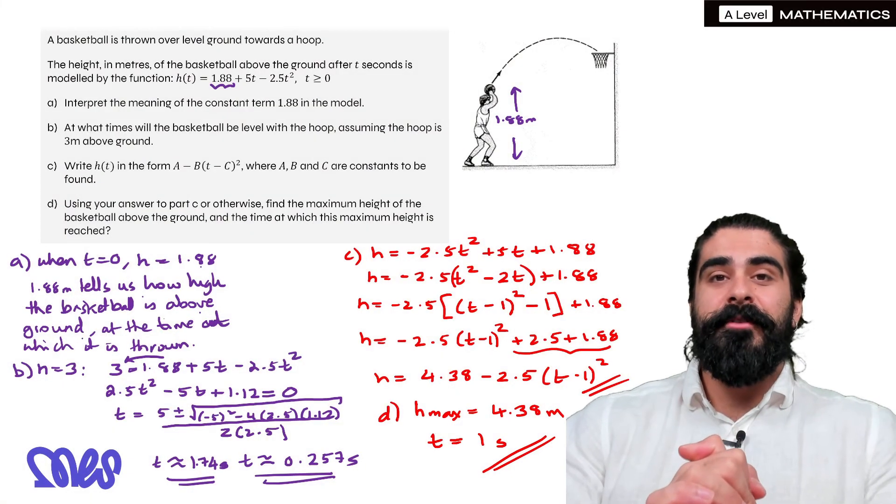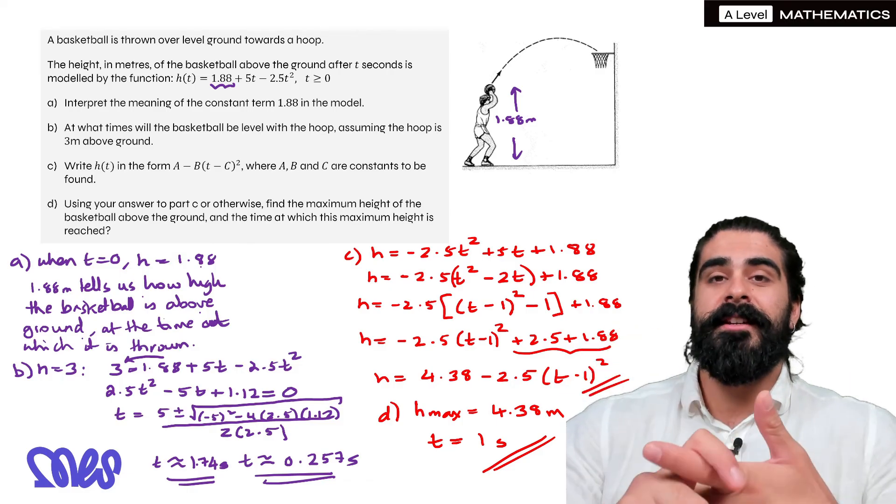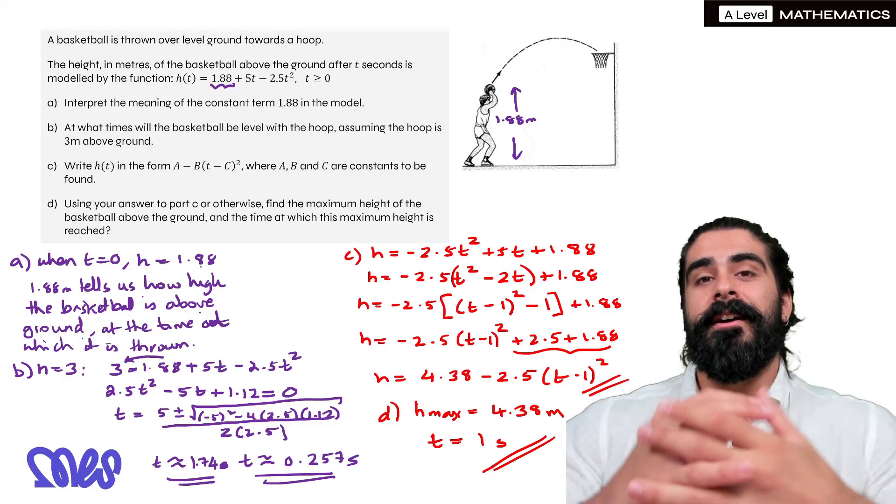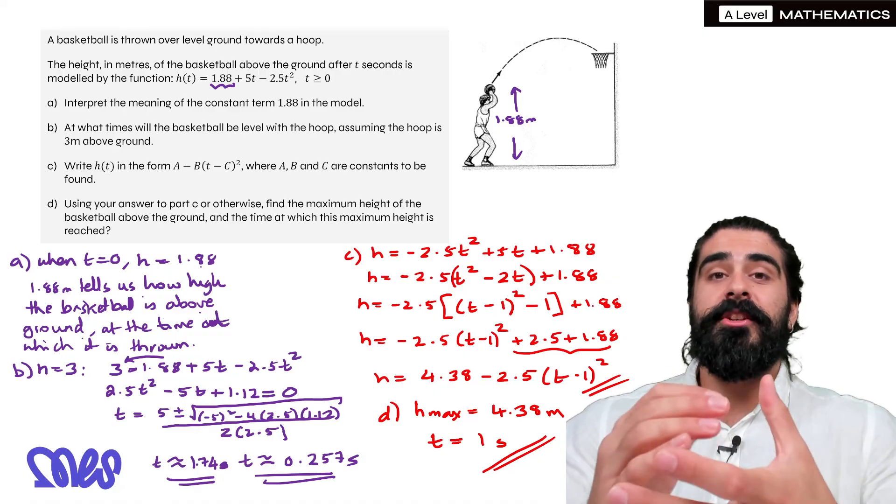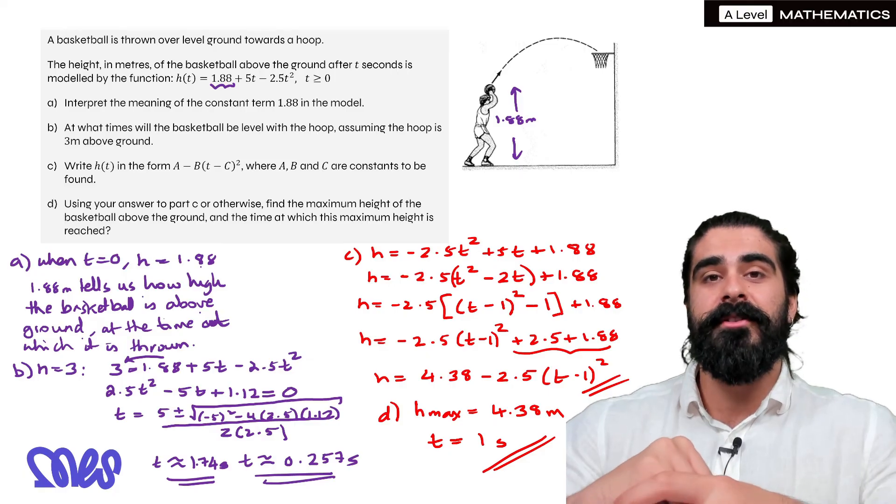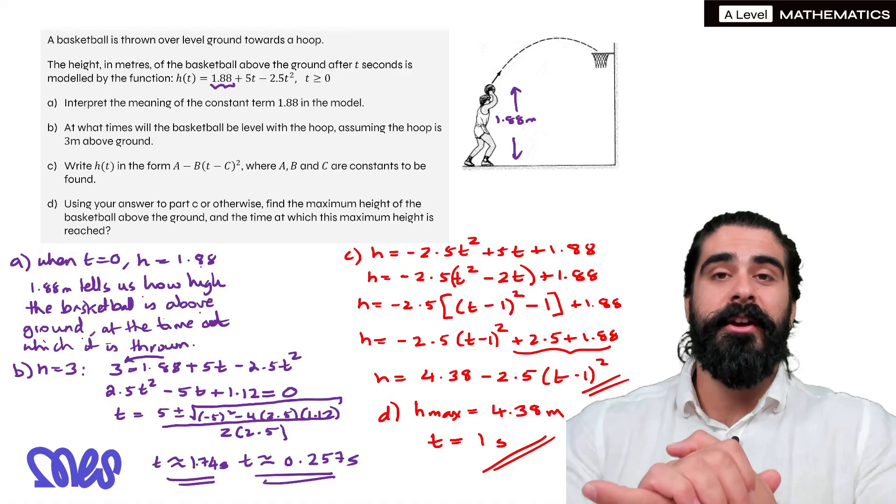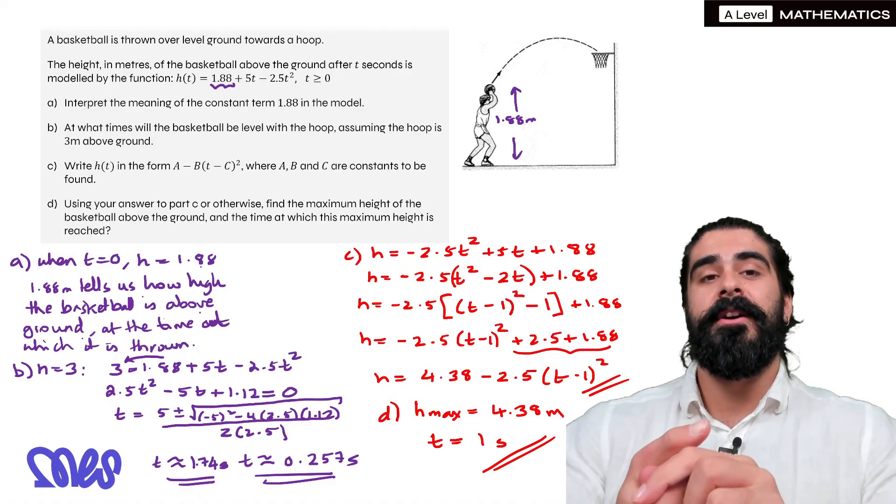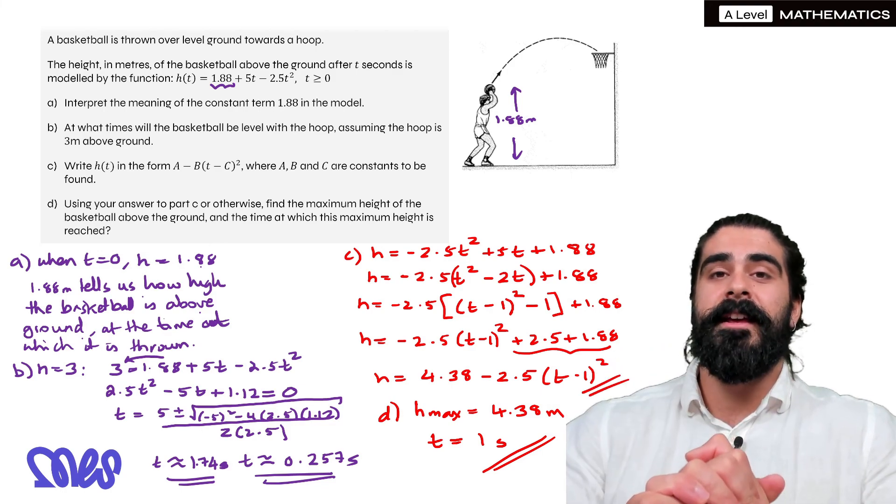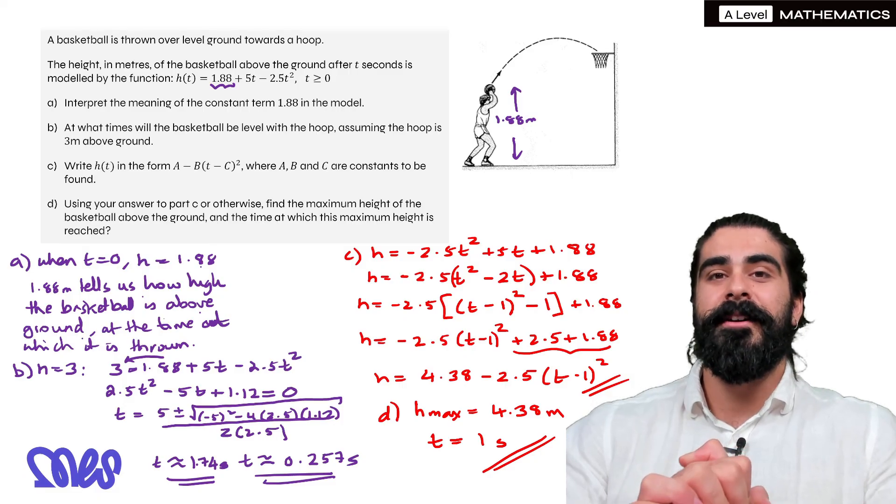Right guys, this concludes our series on quadratics. Here I've shown you how to complete the square, how we use that to sketch quadratics, we've looked at inequalities and inequalities with fractions, and now I've shown you a question on modelling. Now stay tuned because I'm going to do more work on quadratics and how we apply it to things like discriminants. We're going to look at how we solve hidden quadratics, so equations which don't look like quadratics but they actually are. So if you learned something today, please hit the like button and for more content like this, then hit the subscribe button and as always guys, I'll see you in the next video. Peace.